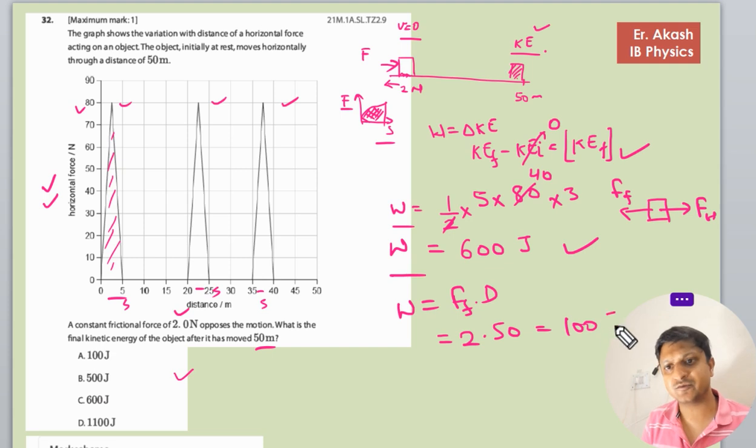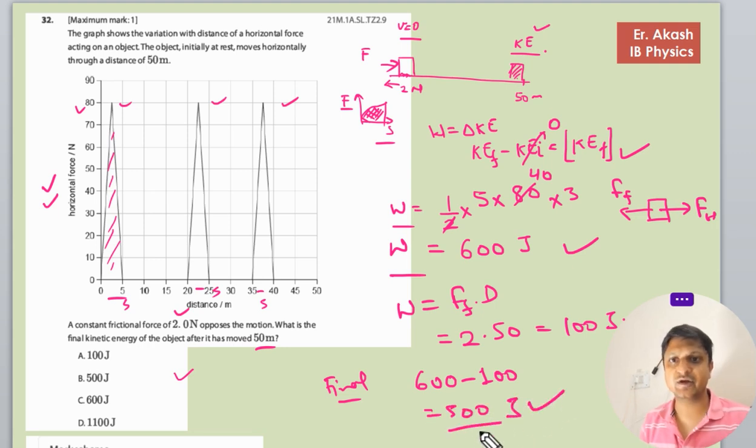So the final will be 600 minus 100, that will be 500 joules. So if there wouldn't be any frictional force, then the kinetic energy would have been 600, but due to the frictional force, 100 joules would be subtracted from the total work done by the horizontal force.